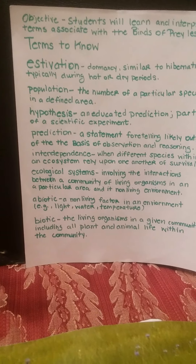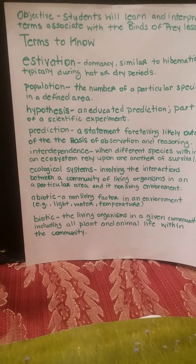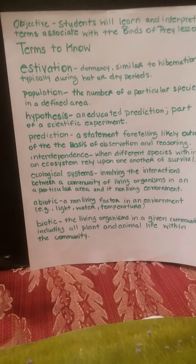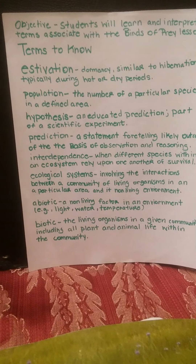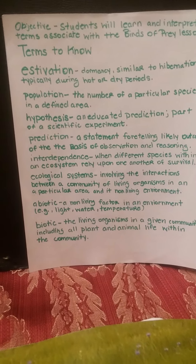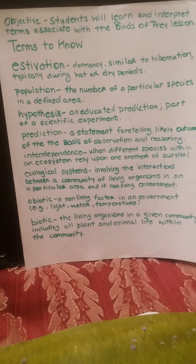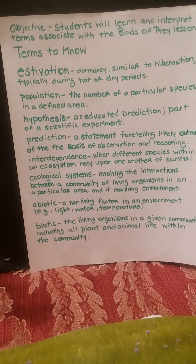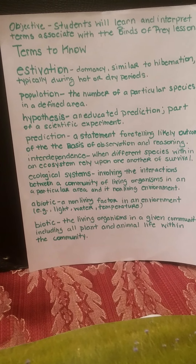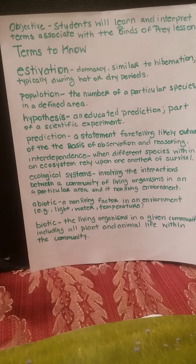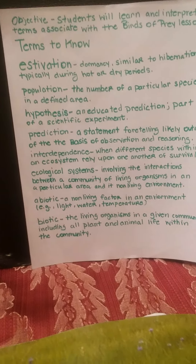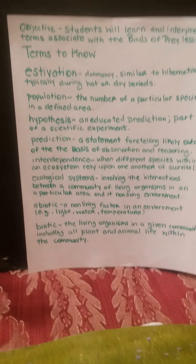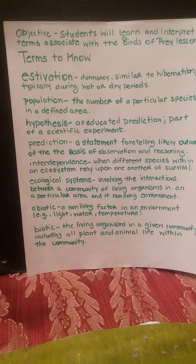Abiotic refers to a non-living factor in an environment. In our lesson, temperature was the abiotic factor, but it could also include light, water, and things like that. Biotic refers to the living organisms in a given community, including all plants and animal life. Our two obvious biotic factors from the lesson were the Piute ground squirrels and the peregrine falcons.